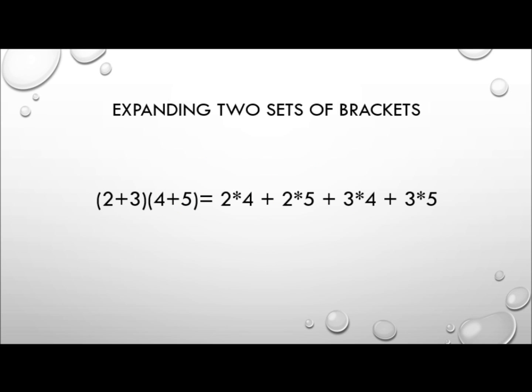Let's check the answer: 2×4=8, 2×5=10, so 8+10=18. Then 3×4=12, 3×5=15, so 12+15=27. And 18+27=45. And of course 5×9 is 45, confirming our result.